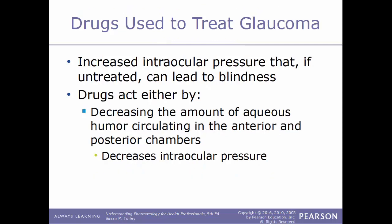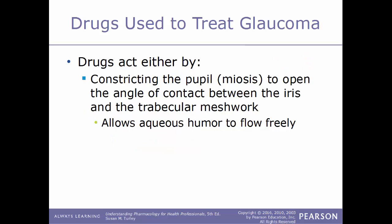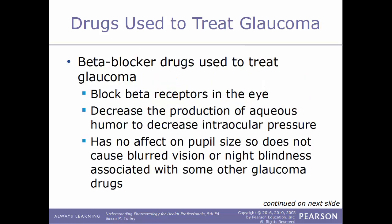Now we'll talk about drugs used to treat glaucoma. Glaucoma is when you have increased intraocular pressure, and if it goes untreated it can eventually lead to blindness. Drugs that treat glaucoma act by either decreasing the amount of aqueous humor circulating within the anterior and posterior chambers of the eye, which lowers intraocular pressure, or by constricting the pupil to open the angle of contact between the iris and the trabecular meshwork, allowing the aqueous humor to flow more freely. The first class we'll discuss are beta blocker drugs, which block the beta receptors in the eye and decrease the production of aqueous humor. These drugs have no effect on pupil size, so they do not cause blurred vision or night blindness.